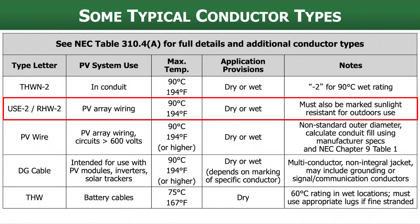USE-2/RHW-2 — that slash means it's dual listed, and you're going to see both of these wire types printed on the conductor itself. As long as this is also marked sunlight resistant, it's really triple listed: USE-2, RHW-2, and marked sunlight resistant. Then we can use this outdoors. It also has a 90°C rating in both dry and wet conditions, and this is something we use for PV array wiring.